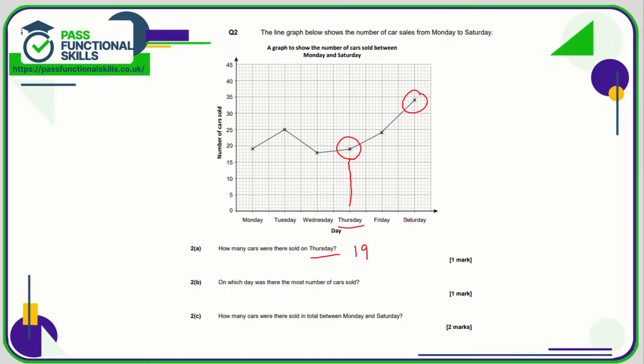And how many cars were there sold in total between Monday and Saturday? So on Monday 19, Tuesday 25, Wednesday that's 15, 16, 17, 18, Thursday we established was 19, Friday is 24, and Saturday is 34. So simply add these figures together and you get a total of 139.